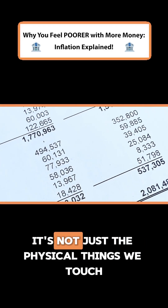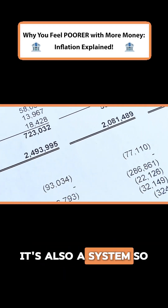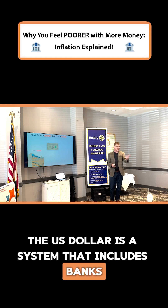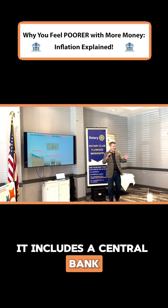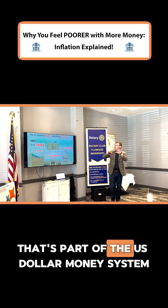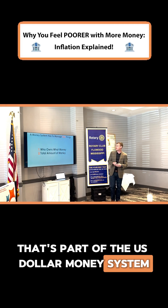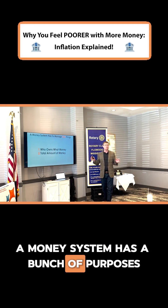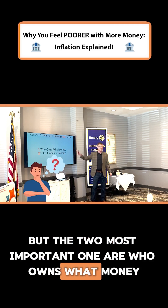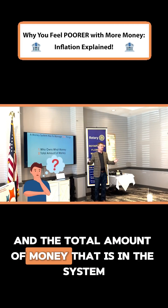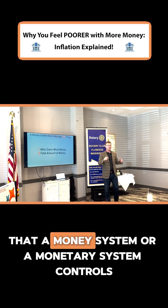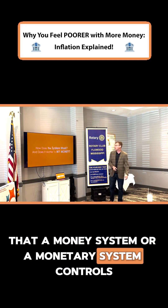Money is also a system — it's not just the physical things we touch. For example, the US dollar is a system that includes banks, a central bank, the government, and of course taxes. A money system has a bunch of purposes, but the two most important ones are who owns what money and the total amount of money that is in the system.